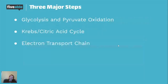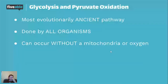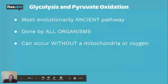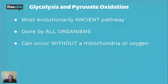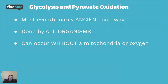The three main steps are: glycolysis and pyruvate oxidation, the Krebs or citric acid cycle — interchangeable names — and the electron transport chain, which includes oxidative phosphorylation. Glycolysis is the most evolutionarily ancient pathway; almost every living thing on Earth goes through it with very similar, if not identical, enzymes. That's something that comes up frequently on the AP exam.